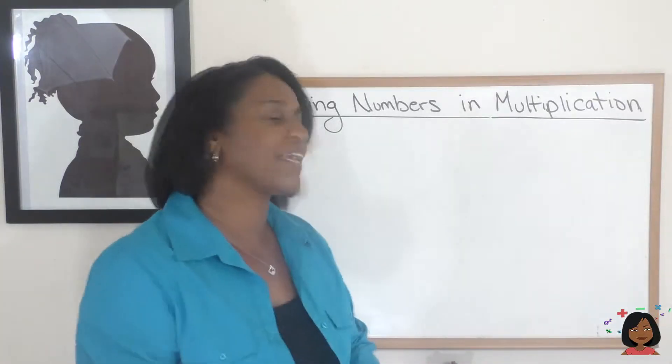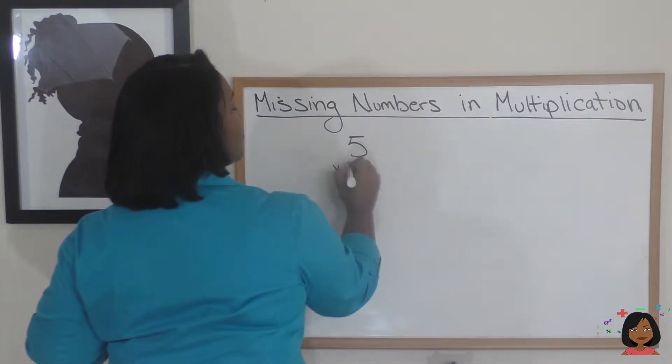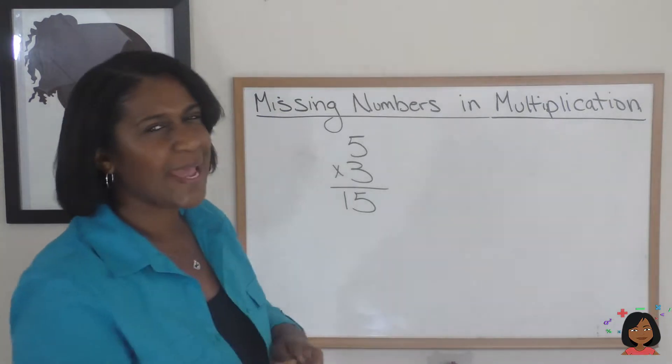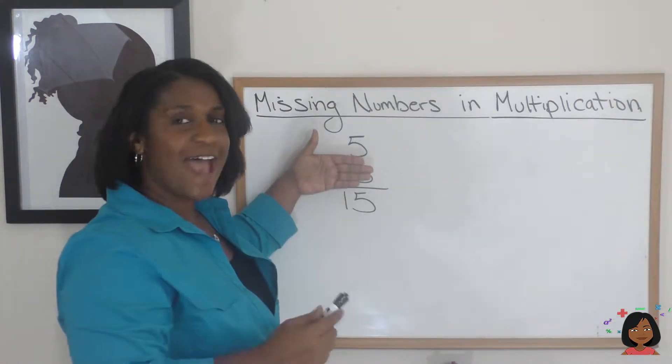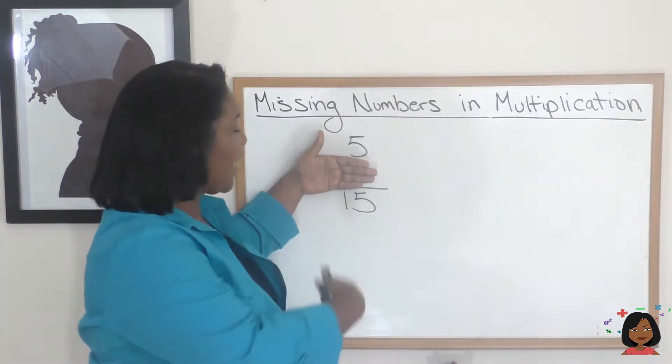Let's start with an easy multiplication example. Let's say we had 5 times 3, which we know is 15. But let's say that one of my factors was missing—my 3 was missing. How would I be able to find it?